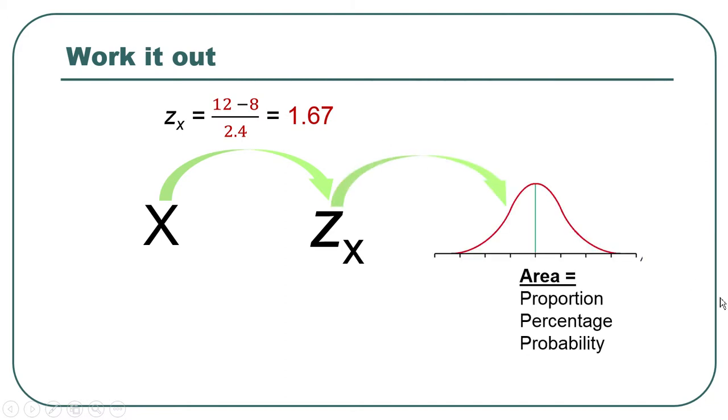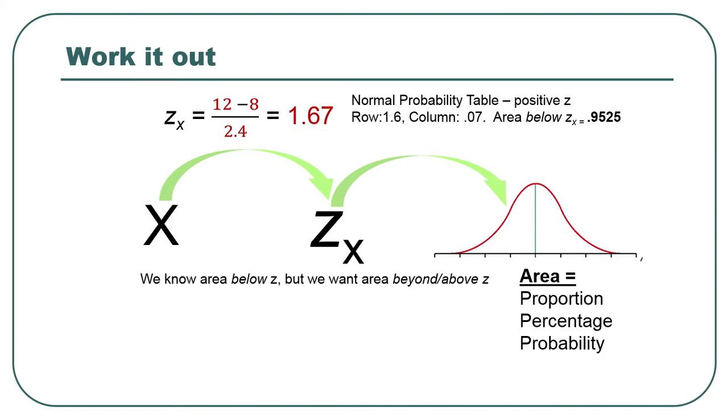And then in the table, in the textbook, we will find that the area below z of x is 0.9525, so 95.25%, but we usually express it as just a probability proportion. So the row we're going to look for is the row of 1.6 in a normal probability table, and the column that says 0.07.